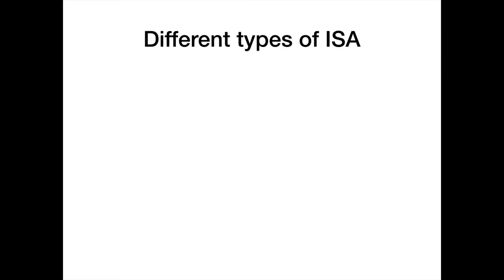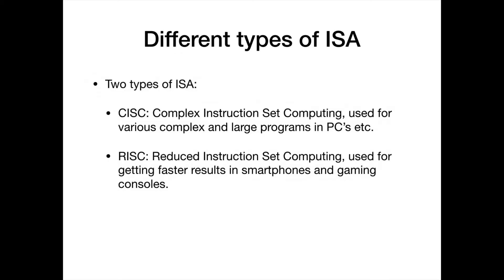There are two types of instruction set architecture. The first is the complex instruction set computing, or CISC, which is used in various complex and large programs in personal computers and laptops. The other type is reduced instruction set computing, or RISC, used for getting faster results in smartphones, gaming industries, and consoles.